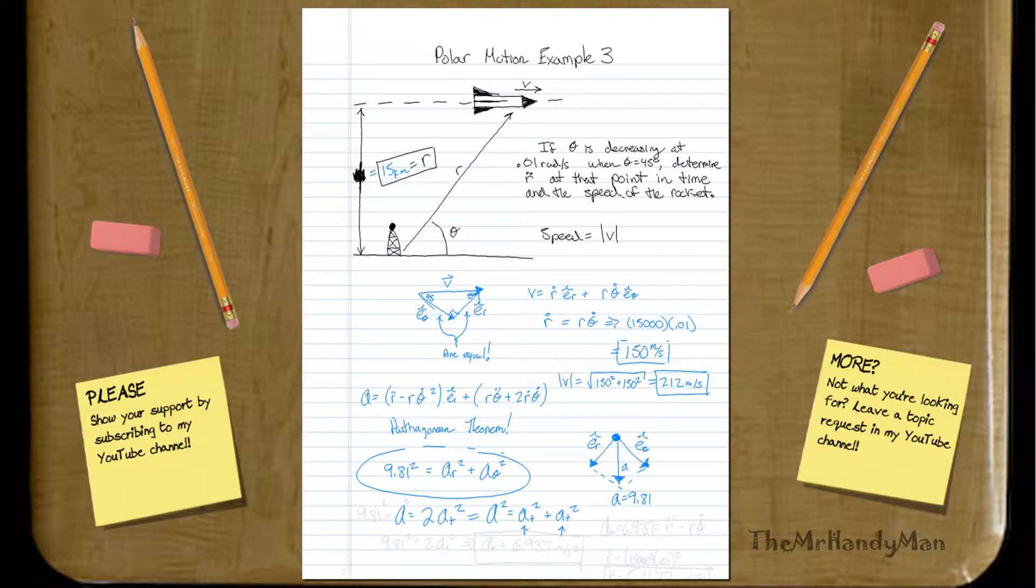And, what we're trying to find here is actually, remember, we're looking for r double dot. So, actually, we want to know what one of these a_t's are. Well, we know what the a is, that is 9.81. And, actually, this should be squared. So, when we work that out, when we actually put 9.81 squared equals two a_t squared, you can actually get a result. a_t will equal 6.937, that's meters per second squared. Great.